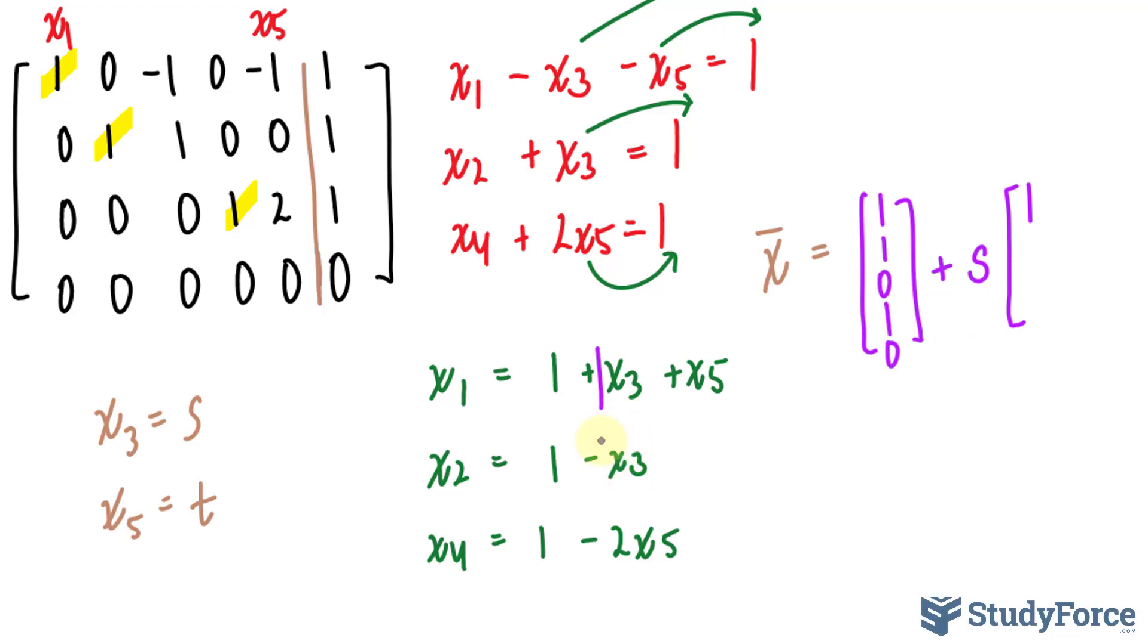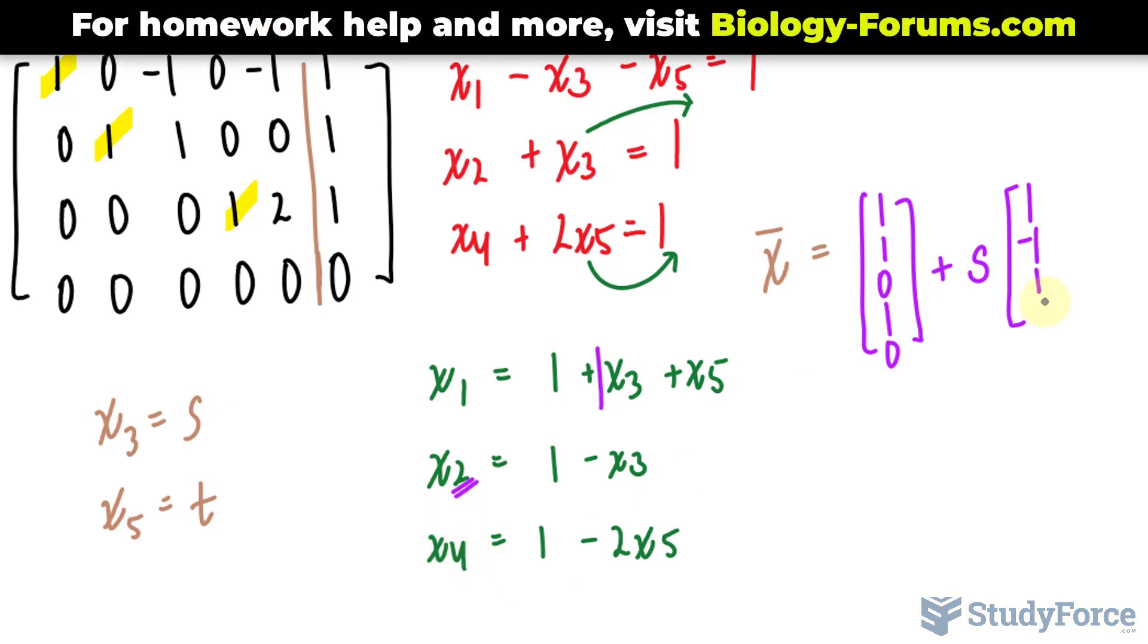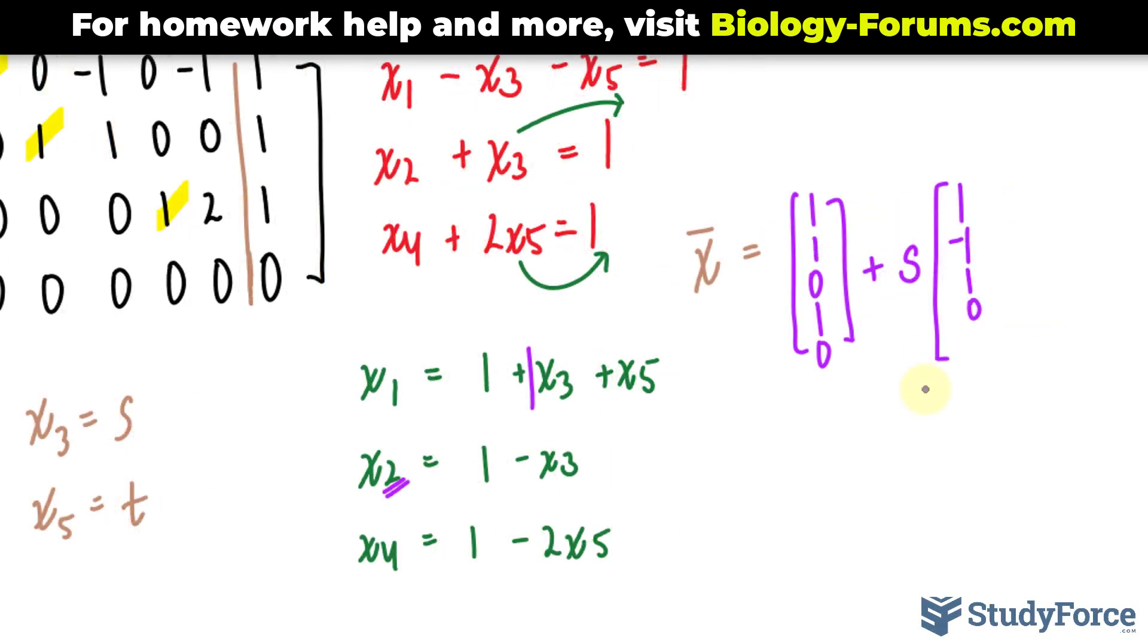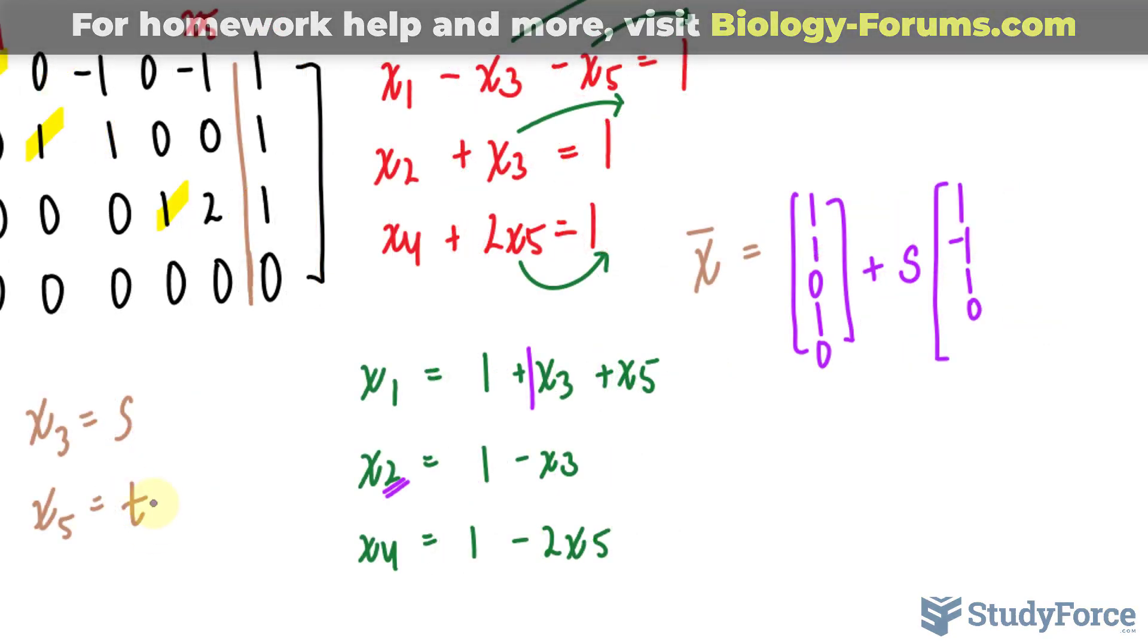Here, that's s. It has a coefficient of negative one, and it's for x sub two. For x sub three, s was one. For x sub four, we didn't have an s, so we'll put a zero. I'll just extend this line. And lastly, for x sub five, we also didn't have an s, so we'll put a zero.